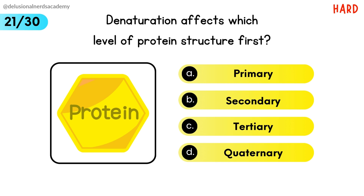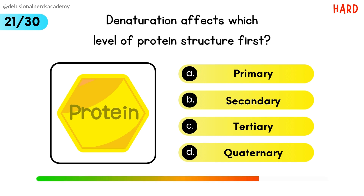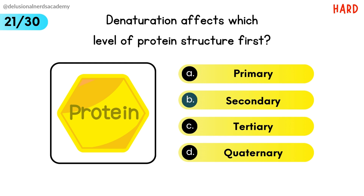Denaturation affects which level of protein structure first? It affects the secondary structure of a protein first.